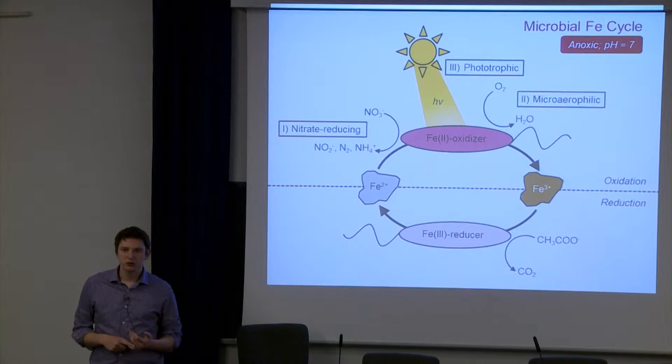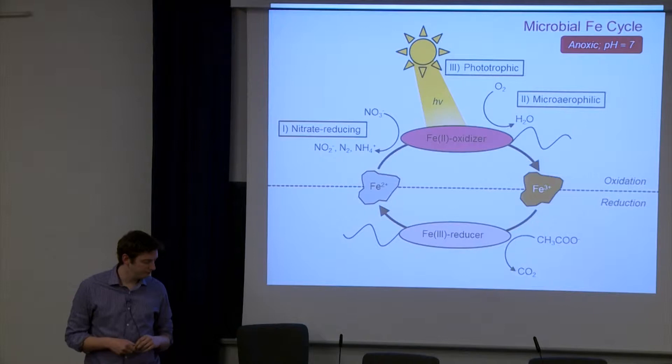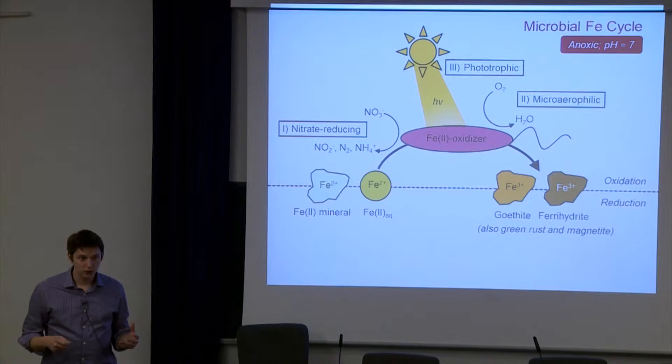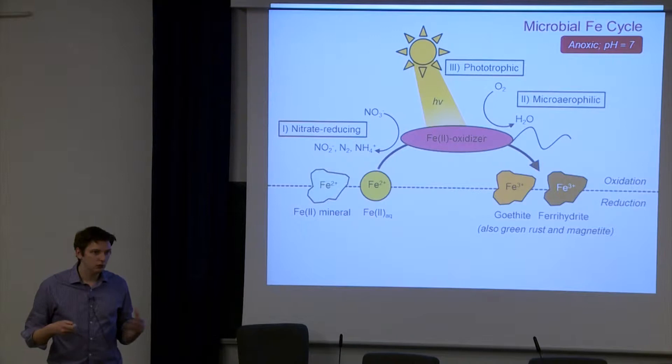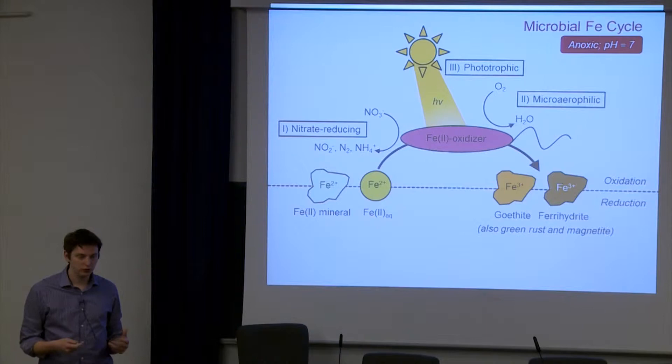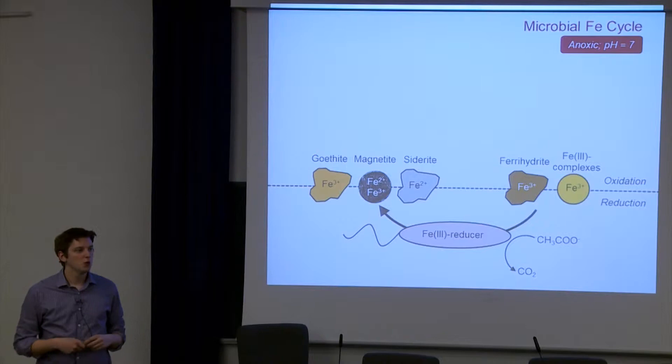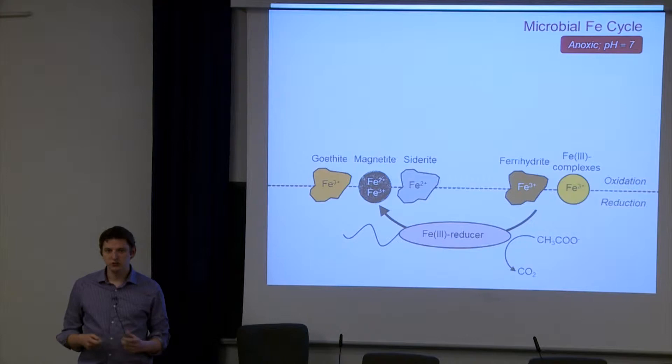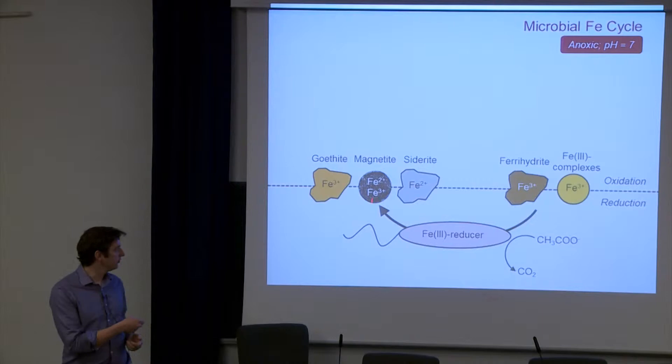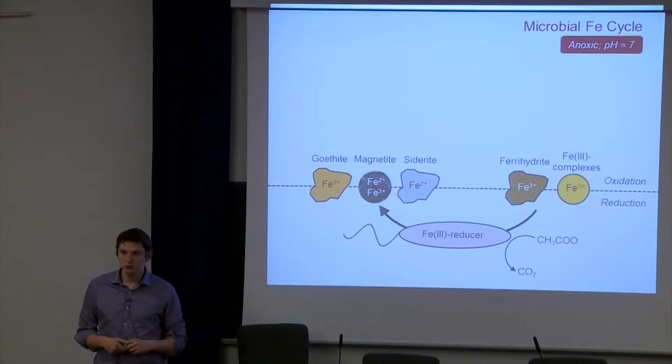When we consider the mineral phases, primarily when looking at iron oxidation, we might start with aqueous iron 2, quite freely available in anoxic conditions, leading to precipitation of minerals such as goethite, ferrihydrite, these iron oxyhydroxides. But there's also evidence that green rust and magnetite can be formed. The iron reducers tend to start with more poorly crystalline phases such as ferrihydrite with high surface area, generally considered quite bioavailable. They can also use iron complexes such as iron citrate, leading to formation of iron 2 minerals like siderite. But there's also the mixed valent magnetite, which is really the focus of my talk today.